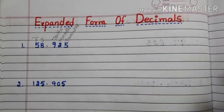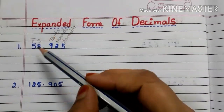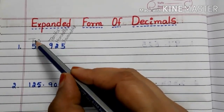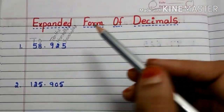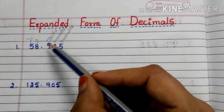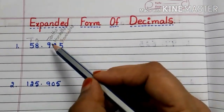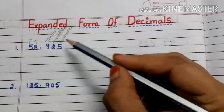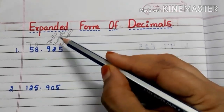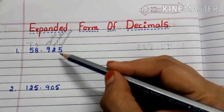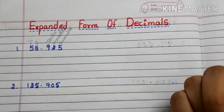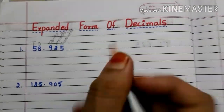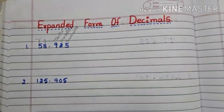See, 8 is in the 1's place, 5 is in the 10's place. Coming to the decimal part, 9 is in the 10ths place, 2 is in the 100ths place, 5 is in the 1000ths place. Now let us write the expanded form.